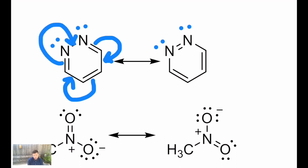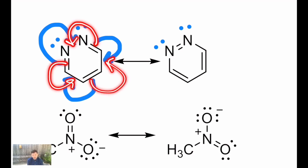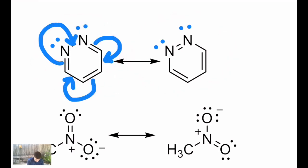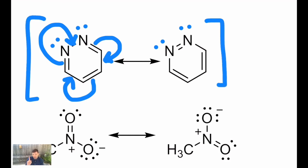You might wonder: couldn't I draw those three curved arrows in the other directions? In this case, yes you can — sometimes, particularly for cyclic examples, there might be more than one way to correctly show how one contributor becomes a second contributor. The one we have here is valid. Sometimes we'll put resonance contributors inside a set of brackets to really highlight that it is one thing, but you don't always have to do that.